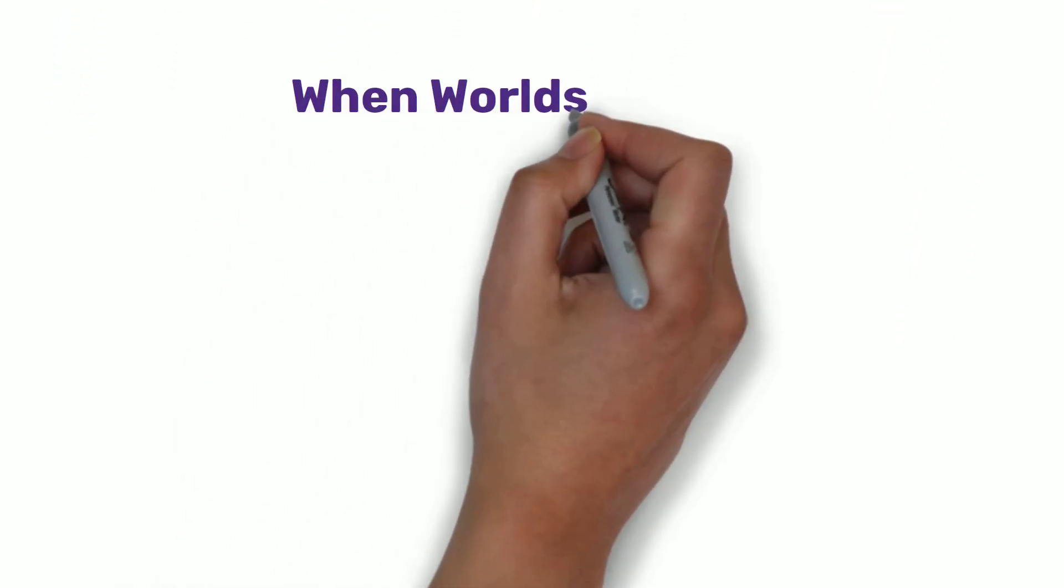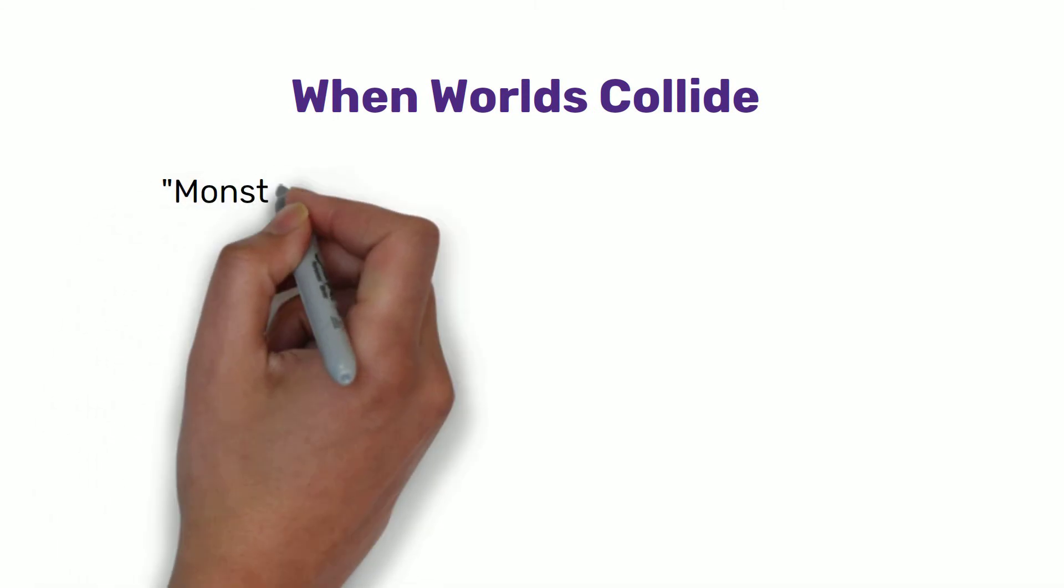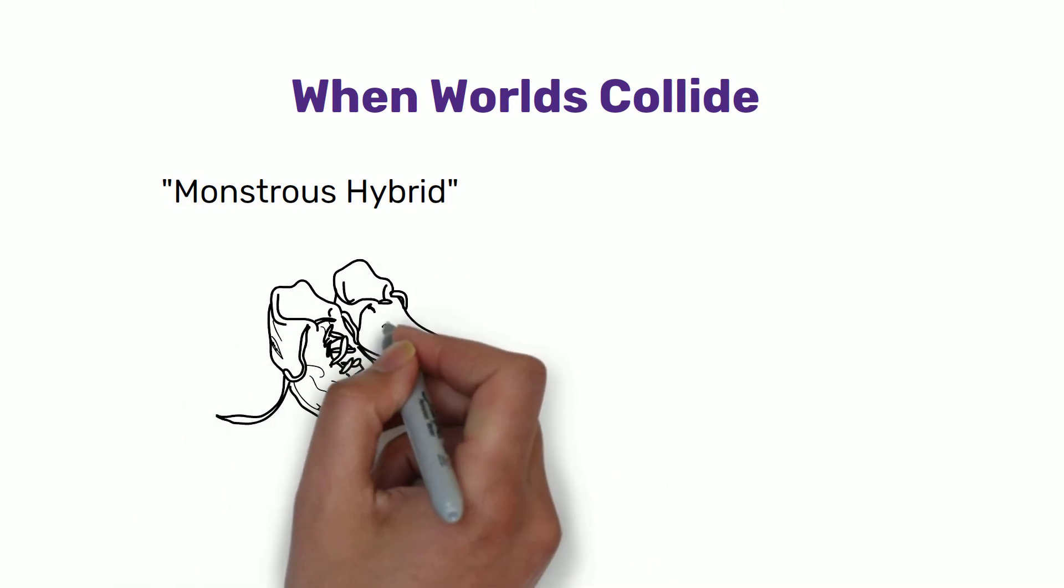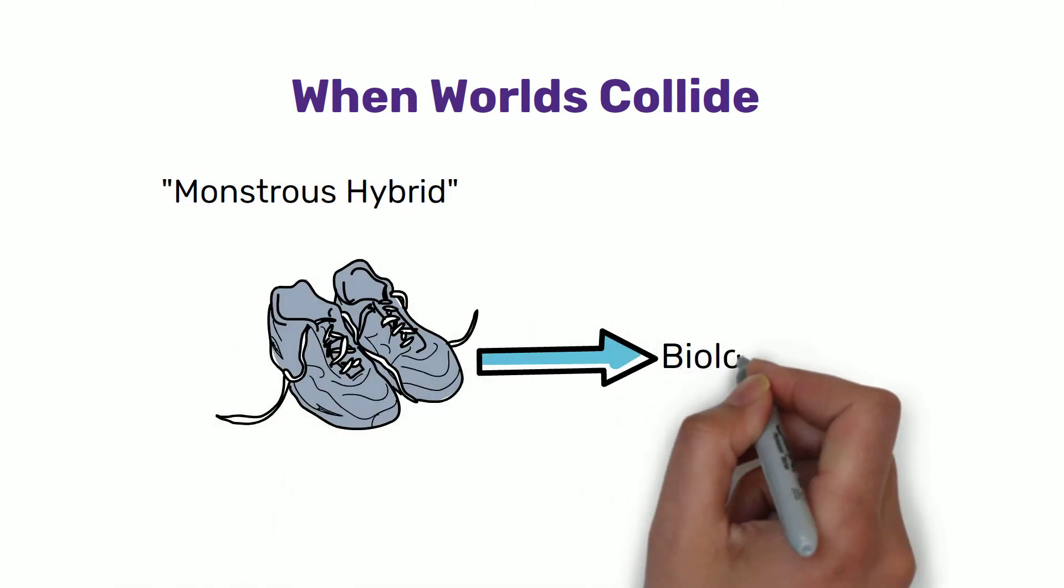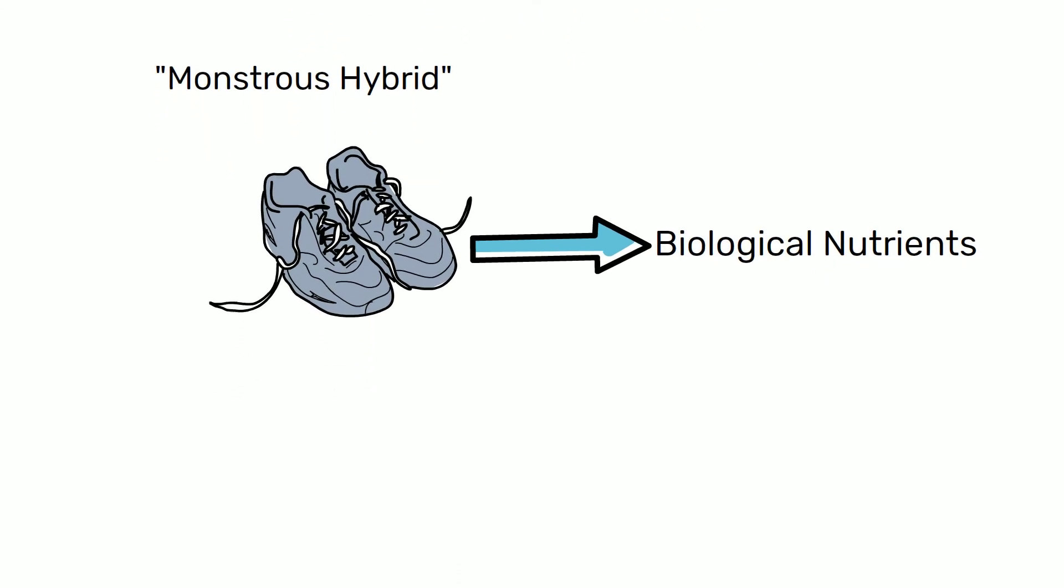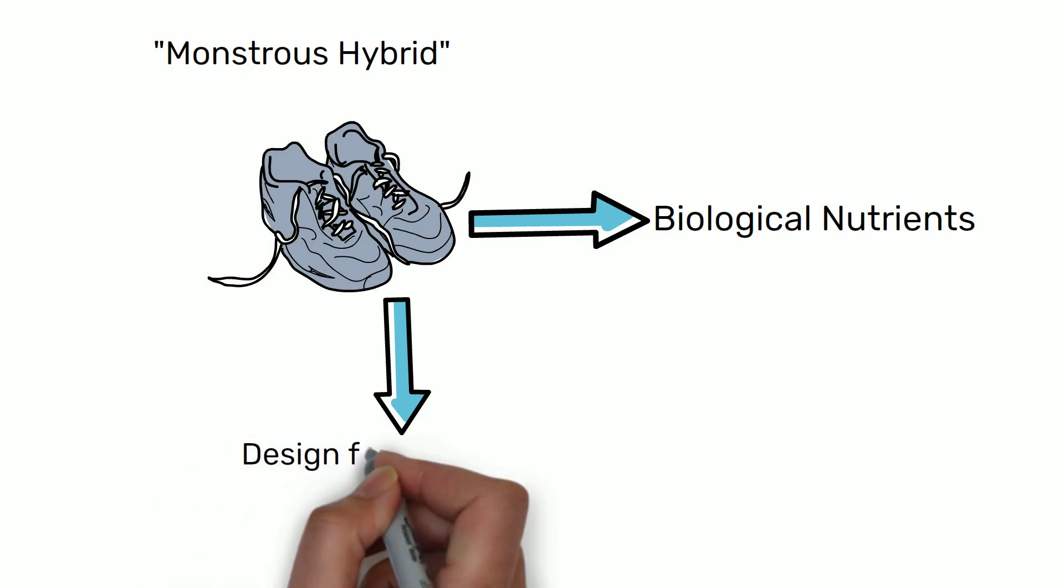When Worlds Collide. If a product must, for a time being, remain a monstrous hybrid, it may take extra ingenuity to design and market it to have positive consequences for both biological and technical metabolisms. Running shoes, for example, can be redesigned so that their soles are biological nutrients. Then, when they break down from pounding feet, they will feed the organic metabolism instead of poisoning it. The shoes should also be designed for easy disassembly in order to be safely recirculated in both cycles.